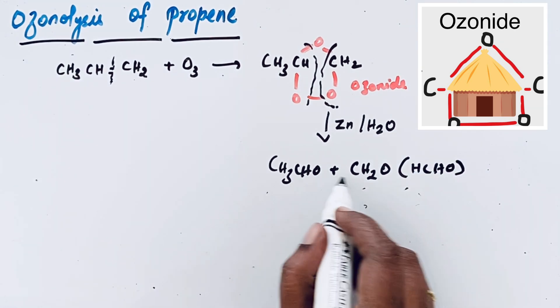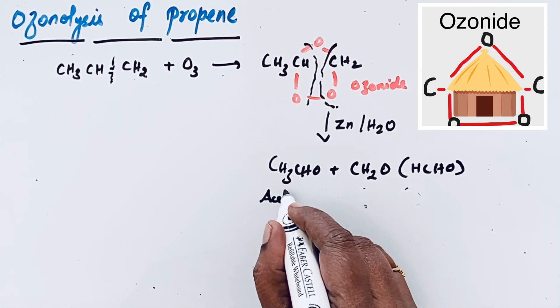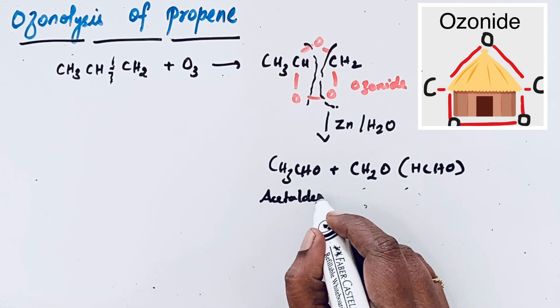There are two aldehyde groups formed from propene now. One is acetaldehyde. Another one is formaldehyde.